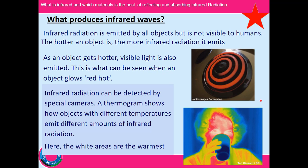How is infrared radiation produced? All objects produce infrared — the only exception is at absolute zero. The hotter an object is, the more infrared radiation it produces. At sufficient temperatures, objects won't just produce infrared; they also produce visible light.